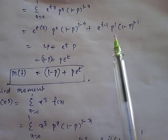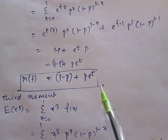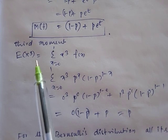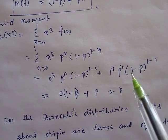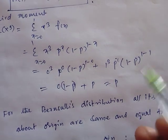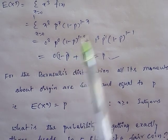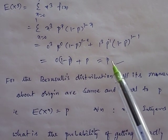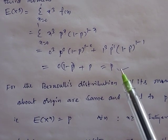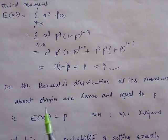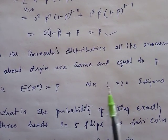Substituting x = 0 and x = 1 gives M(t) = (1−p) + p·e^t — the moment generating function of the Bernoulli random variable. Notably, the third moment E(X³) also equals p. In general, for the Bernoulli distribution, all moments about the origin are equal: E(X^n) = p for all integers n ≥ 1.